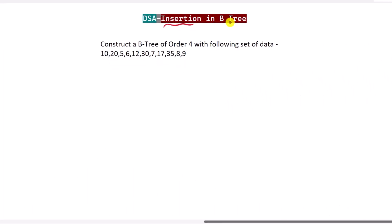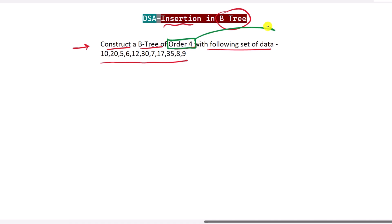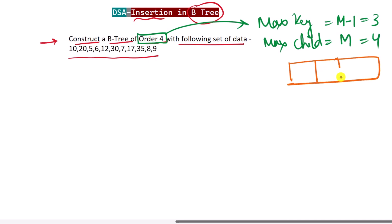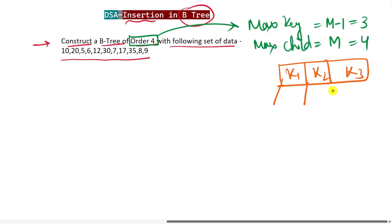Let's see how we can insert elements in a B-tree. We'll construct a B-tree of order 4 with a given set of data. The maximum keys per node should be order minus 1, which is 4 minus 1 = 3. The maximum children per node should be m = 4. So a node can have at most three keys — k1, k2, k3 — and at most four children.